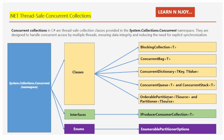Next, we have OrderablePartitioner<TSource> and Partitioner<TSource>. These are like assigning different tasks to chefs so that everyone has a fair share of the workload. It helps in splitting up large tasks into smaller parts that can be handled in parallel, speeding up the overall process.